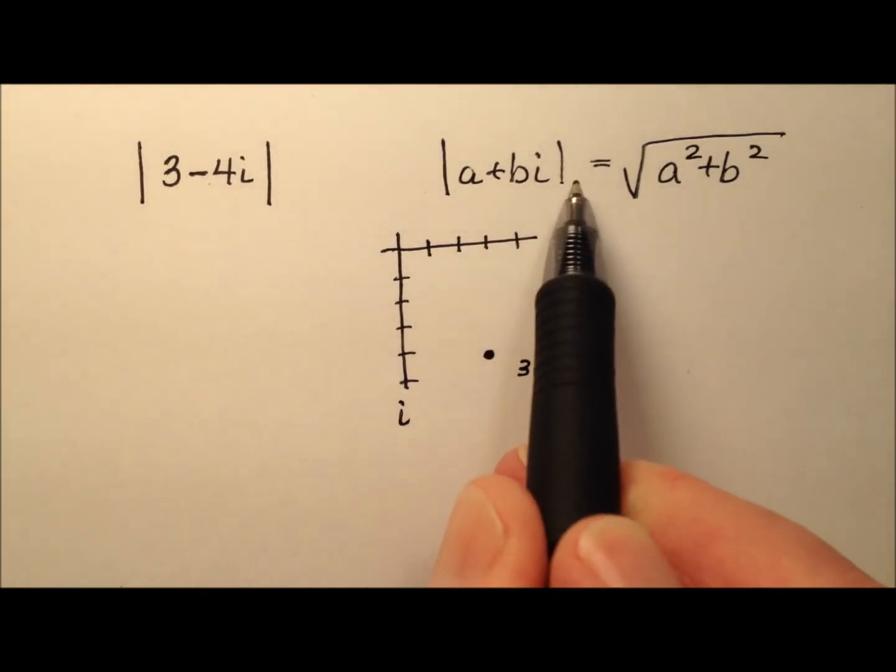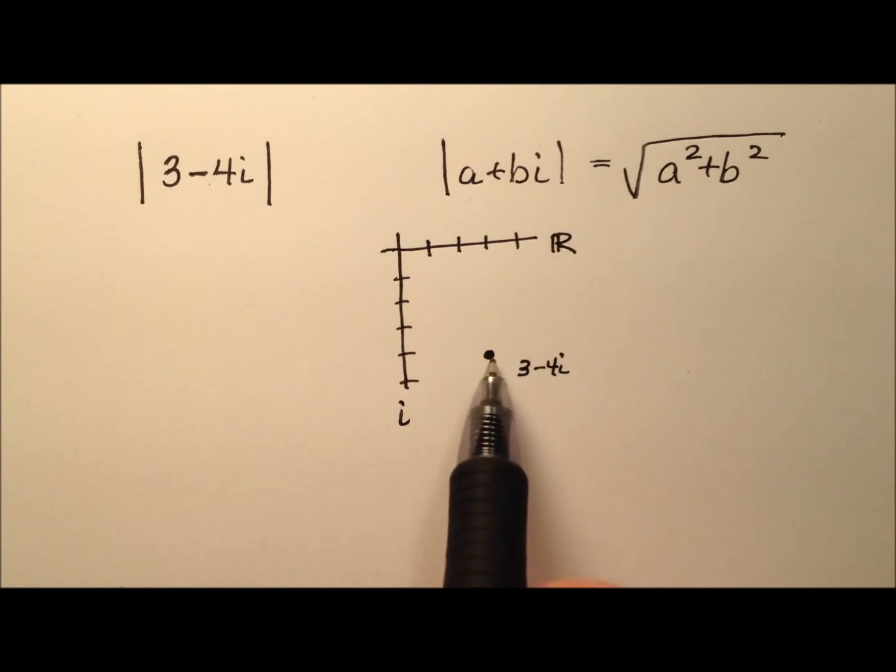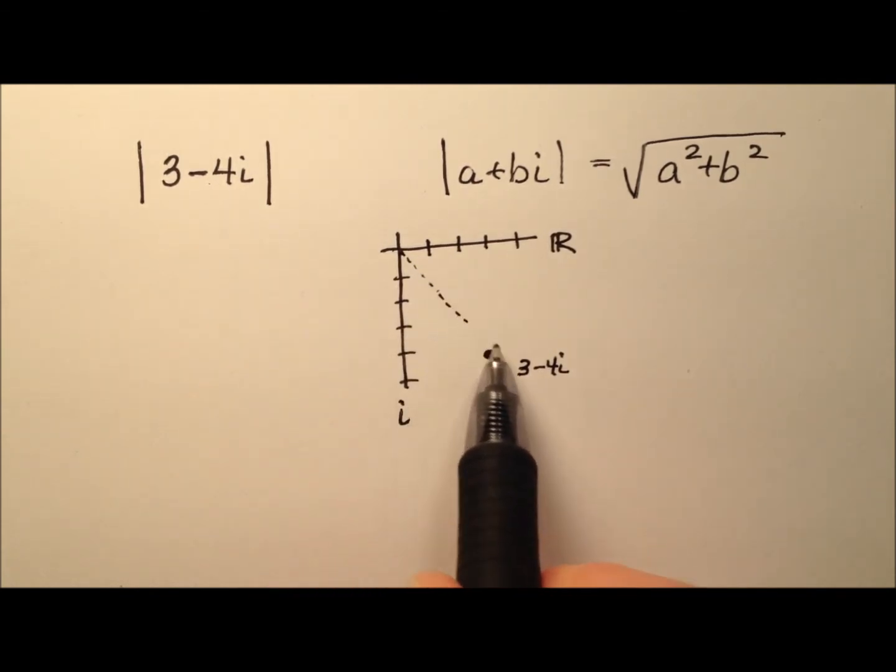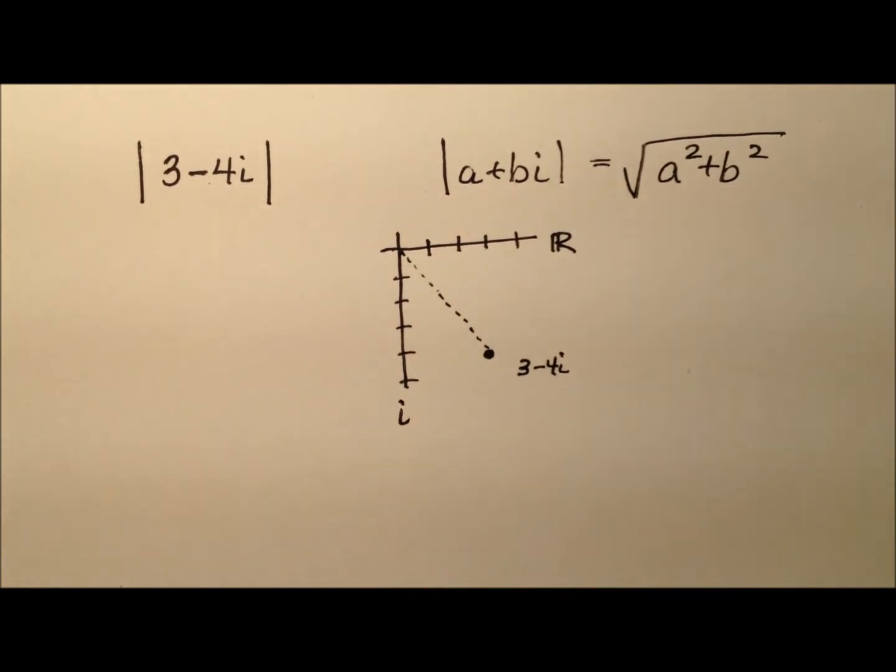And so the absolute value, remember, just measures the distance a number is from the origin. So we'll go ahead and do this little dashed line. And this length right here is what we're looking for. That's the absolute value or the distance. Also for complex numbers, it's called the modulus.